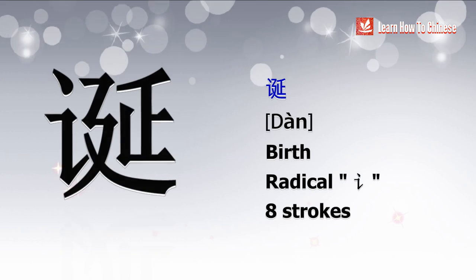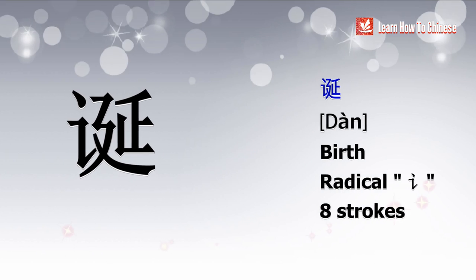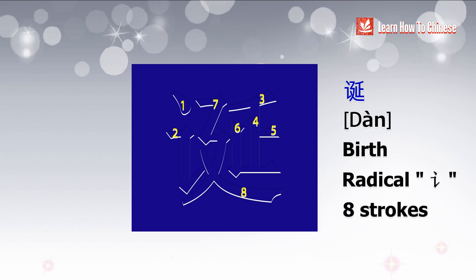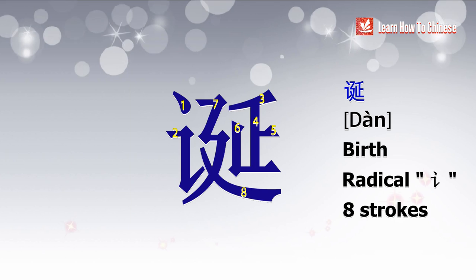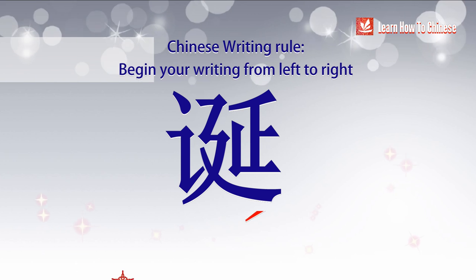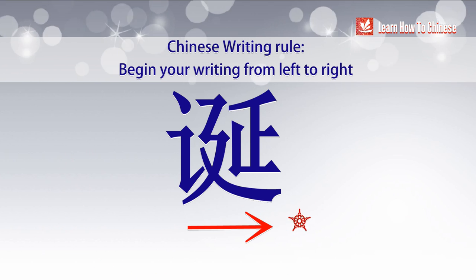Next is 但. The radical is 言, which means speech in English. Now each time you see this radical, you know the character you're reading is speech-related. This character may look complicated, but it has only 8 strokes, because it has a combination of falling and turning strokes. Here's the second rule: always start your writing from left to right.